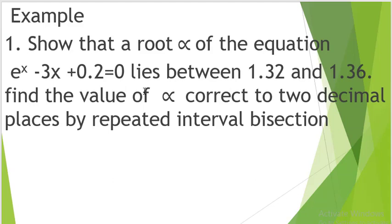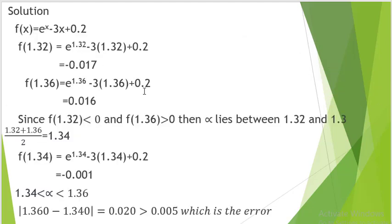Example: Show that the root alpha of the equation e^x minus 3x plus 0.2 equal to 0 lies between 1.32 and 1.36. Then find the value of alpha correct to two decimal places by repeated interval bisection. f(1.32) equals e^1.32 minus 3 times 1.32 plus 0.2, which gives negative 0.017. f(1.36) equals e^1.36 minus 3 times 1.36 plus 0.2, which gives positive 0.016. Since one is negative and the other positive, the root lies between 1.32 and 1.36.